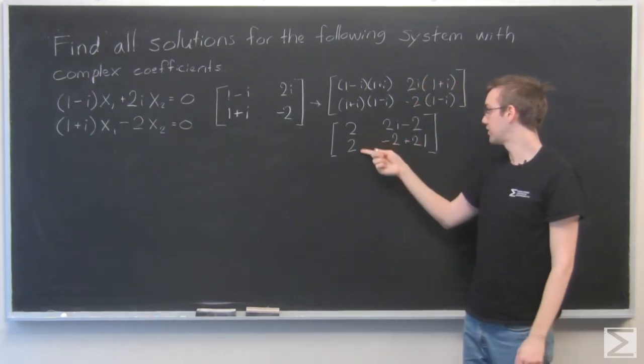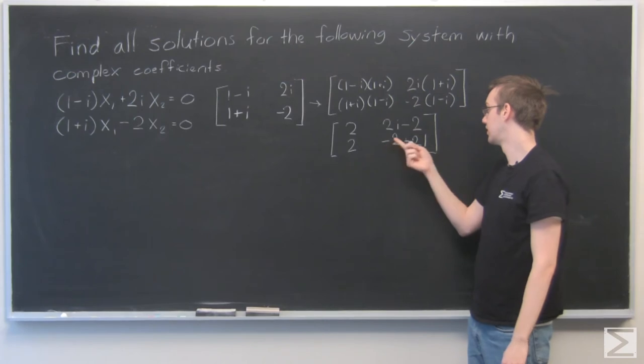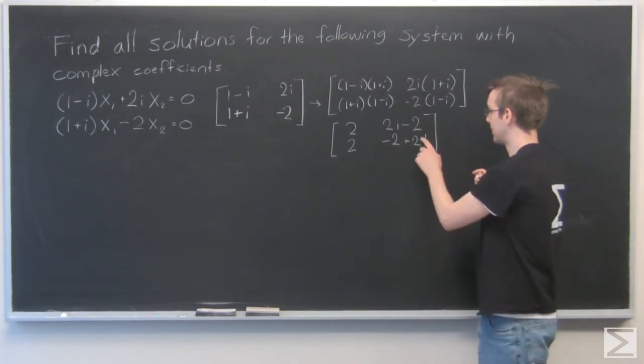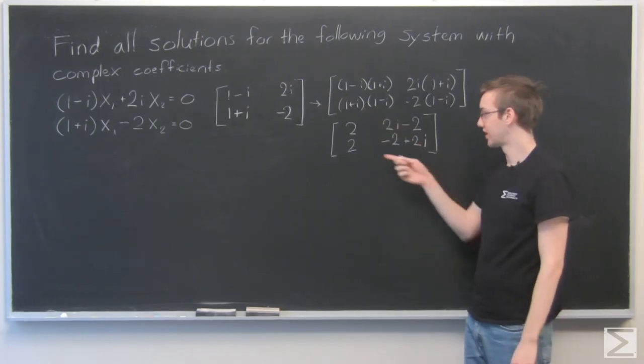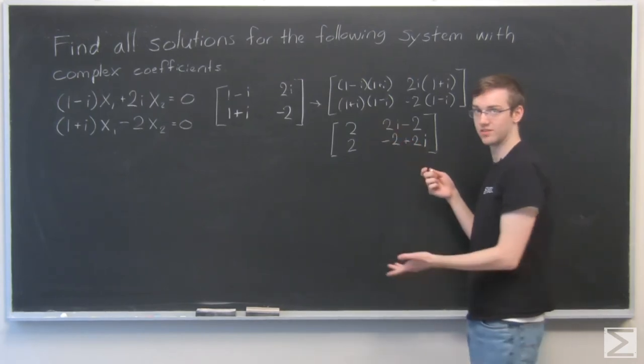So I can see here, both of these are 2. And this is 2i minus 2, minus 2 plus 2i. The top and the bottom are the same, so I can subtract out the bottom one, just because they're the same number.